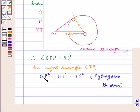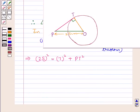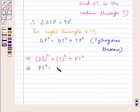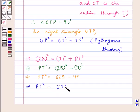And now we have the values of OP and OT, and we have to find the value of TP or PT. So substituting the values we have (25)² = (7)² + PT². So further we get PT² = (25)² - (7)². This means PT² = 625 - 49. And from here we get PT² = 576.